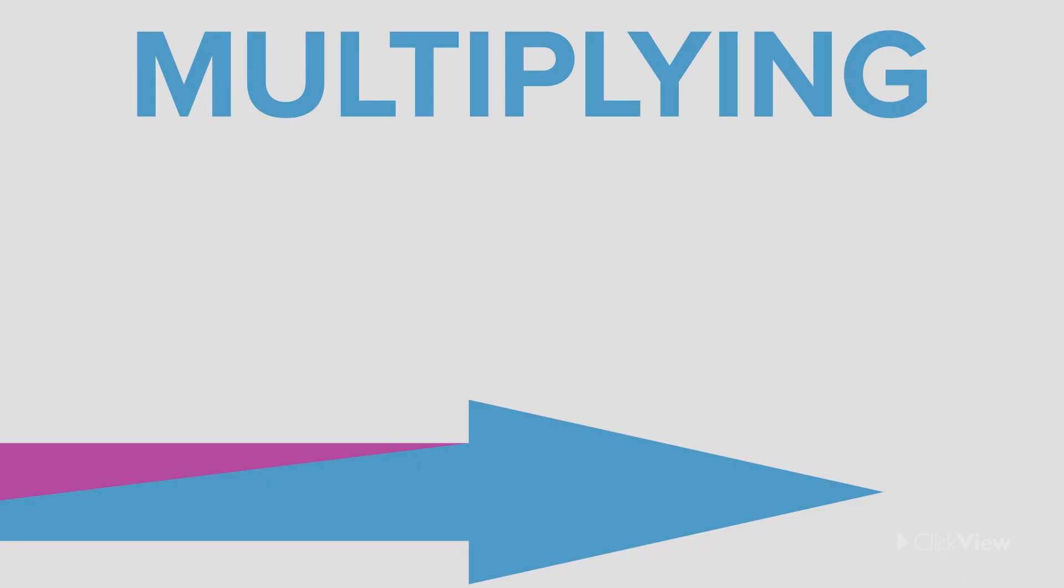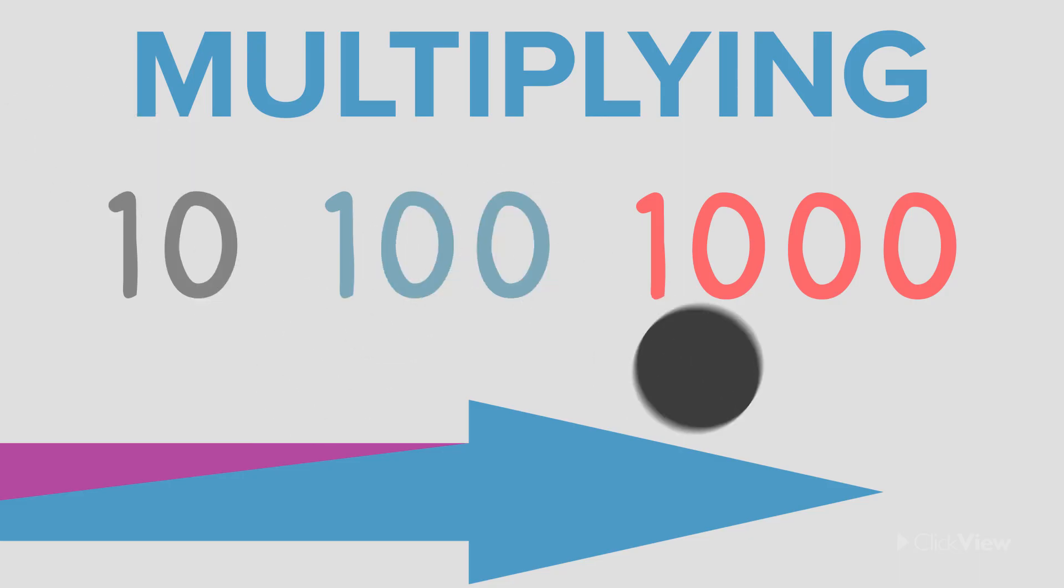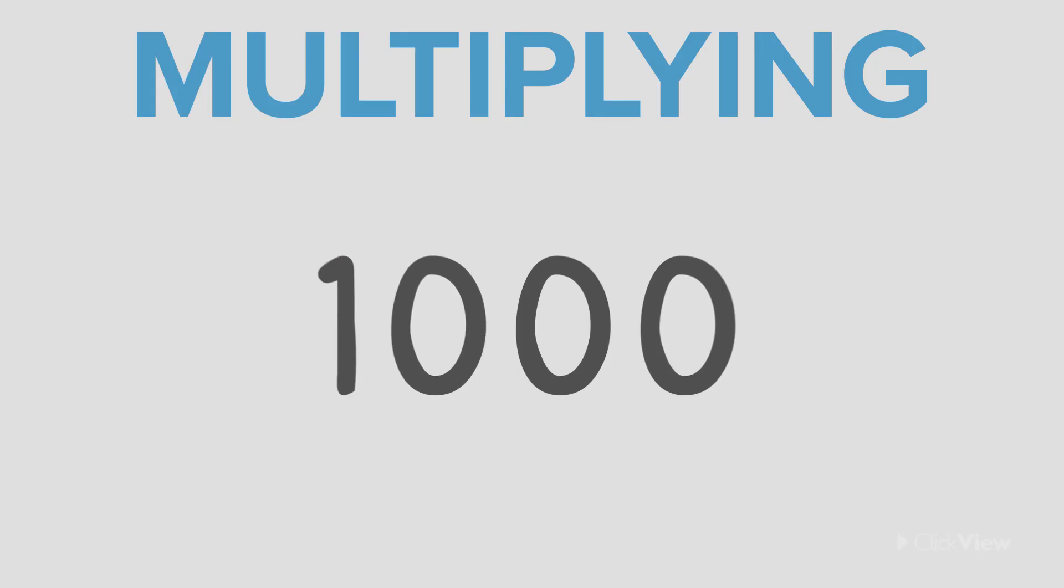Remember, if you are multiplying a decimal by 10, 100, or 1000, you move the decimal point to the right. And don't forget to count the zeros in these numbers, because they will tell you straight away how many places to shift your decimal.